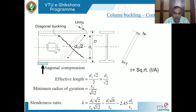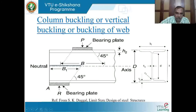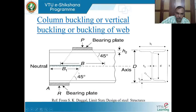The slenderness ratio 2.45·D1/TW typically gives values of 60, 70, 80, 90 or more. The corresponding column buckling stress is found from IS 800 Annex tables for the relevant steel grade and buckling curve. This stress multiplied by the effective web area gives the allowable buckling load for the web under concentrated force or reaction.